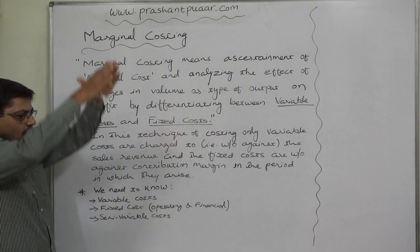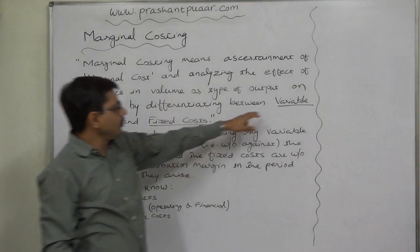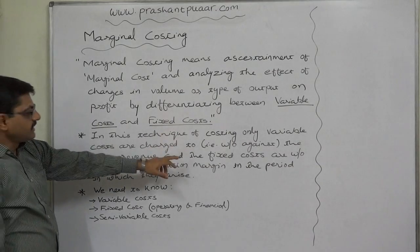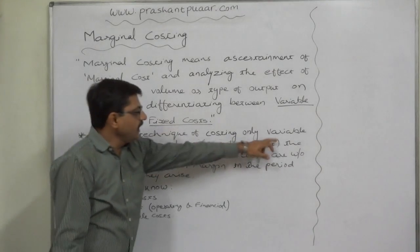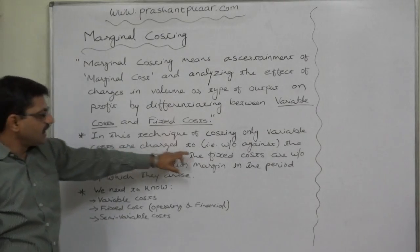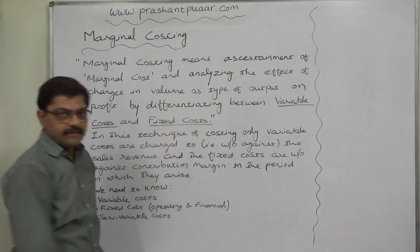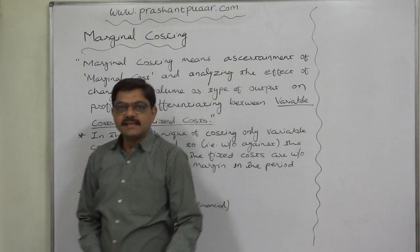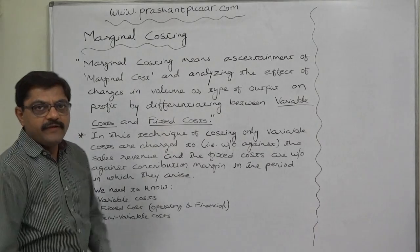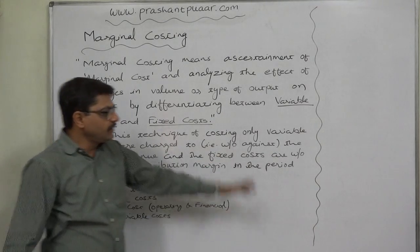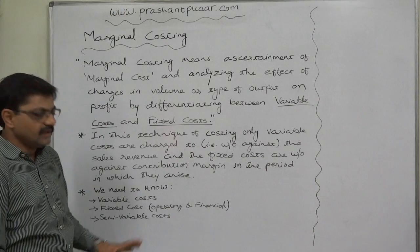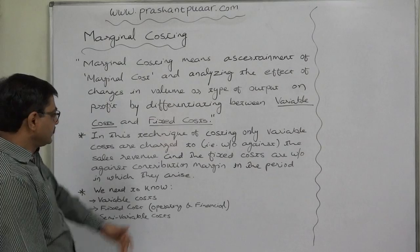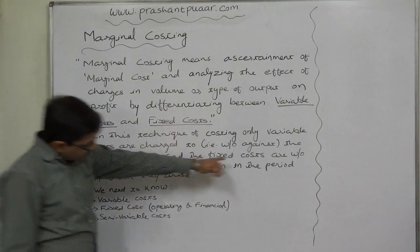The total cost is segregated into two parts — variable cost and fixed cost. In this technique of marginal costing, only variable costs are charged against the sales revenue. We account for all sales revenues and from the aggregate sales revenue for the period, we first charge or write off only variable cost. The balancing amount is popularly known as contribution margin, and the fixed costs are written off against the contribution margin in the period in which they arise.